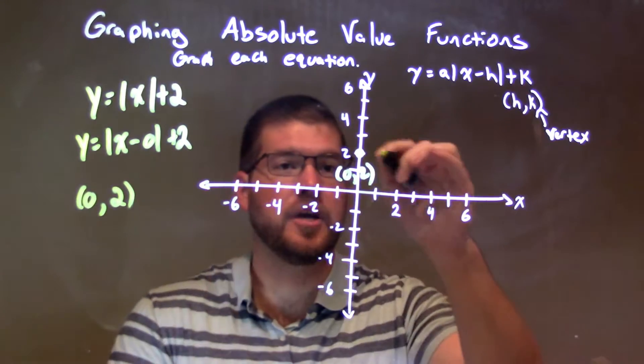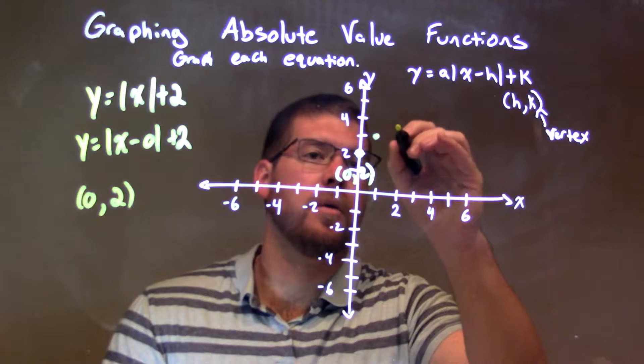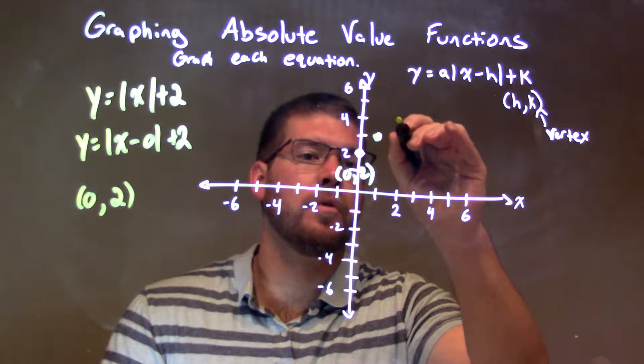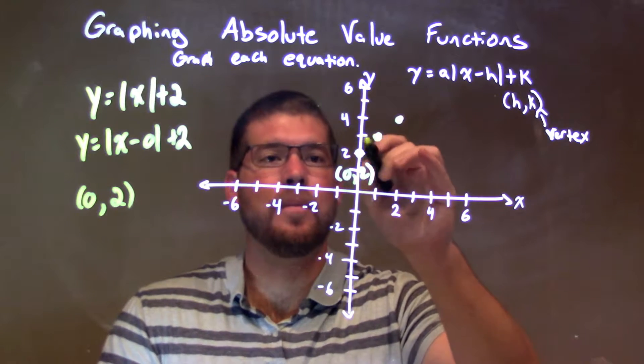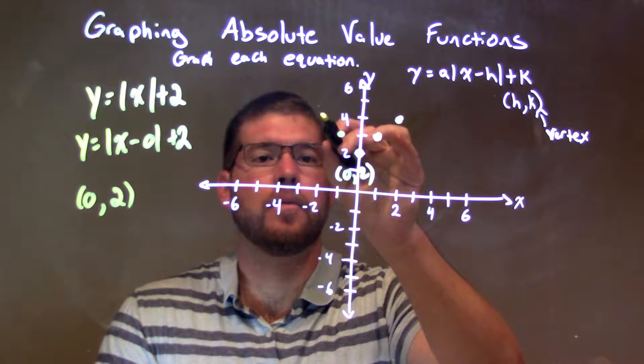And it's a positive value, so it's a v-shape, up 1 over 1, up 1. Okay, and we mirror that on the left, up 1 over 1, and up 1 over 1.